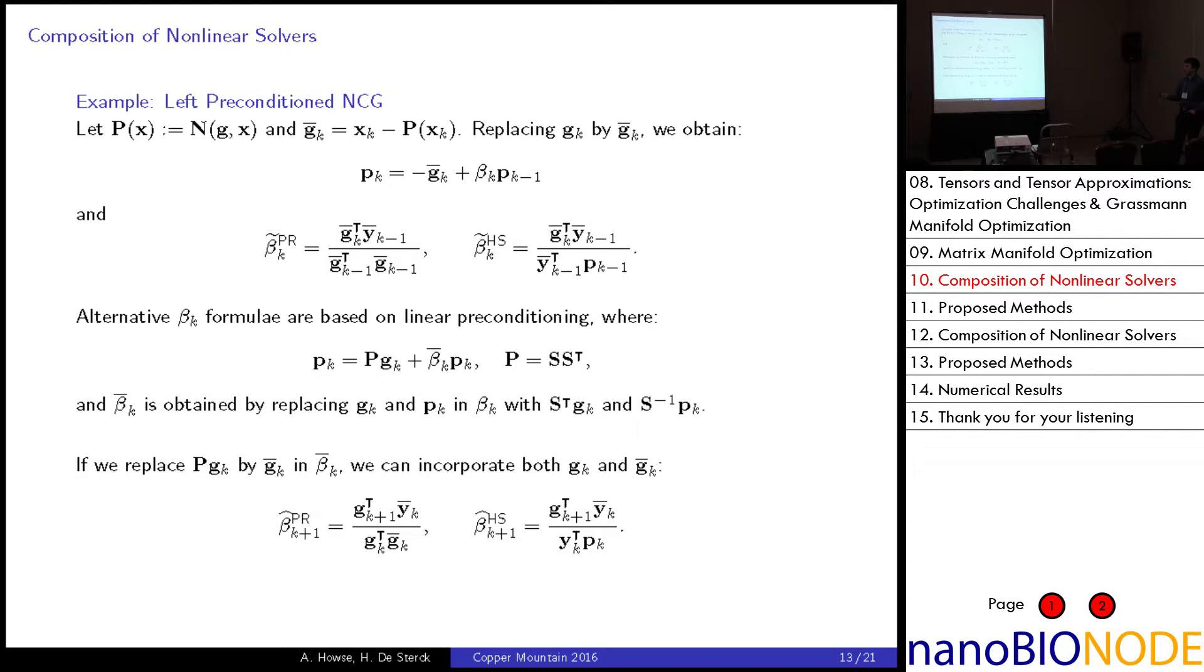Now, this is the most straightforward way of going about this, but it's also possible to derive alternate beta K formulas based on the idea of linear preconditioning. So, the linearly preconditioned linear CG iteration is as follows. We have P of G of K and P is equal to some matrix SS transpose. And we can obtain the corresponding update parameters beta by replacing G and P in the beta formula with S transpose G and S inverse P. So, by doing this, we get some particular nice form or we obtain the matrix P in our beta formulas in different locations. And if we look at these results and replace P G_k by G bar, G bar being the result of our nonlinear left preconditioning, we can incorporate both information from our gradient and from the nonlinear residual function in the computation of our beta formulas. So, these are two other alternatives for computing our update parameter.